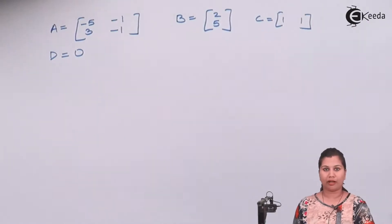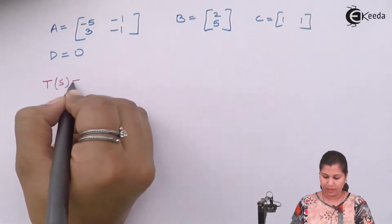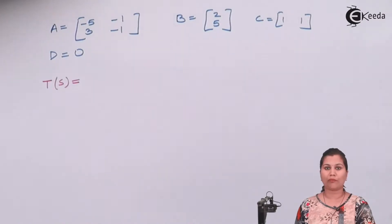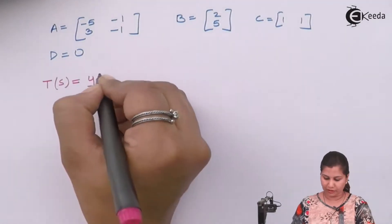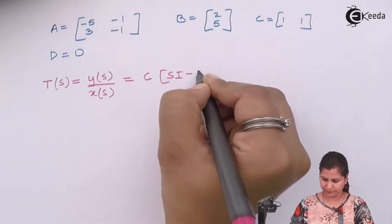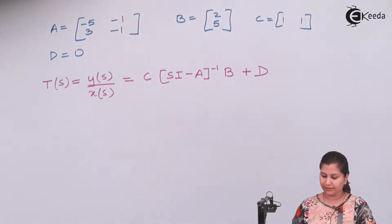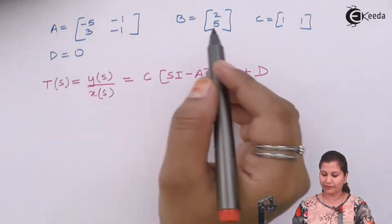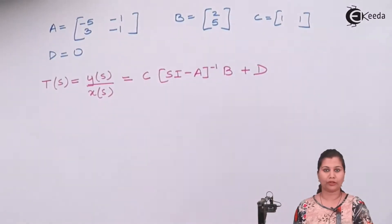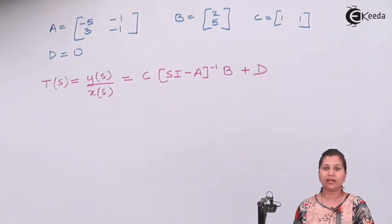Now we have to find the transfer function. The formula for the transfer function using the state model is the ratio of the Laplace transform of the output and the input, Y(s)/U(s). The formula comes out to be C(sI - A)^{-1}B + D, where the matrices C, A, B, and D values are known to us from the question.